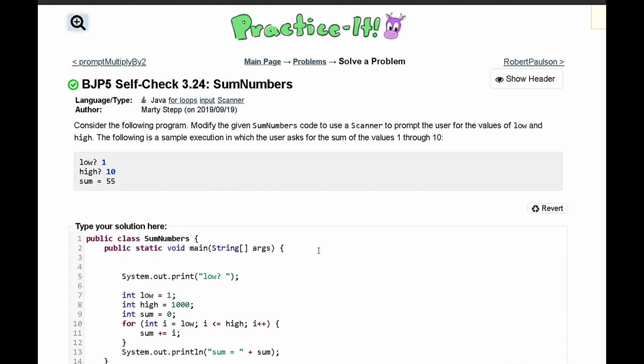So we'll have a scanner we'll call scan and set it equal to a new Scanner with parameter System.in to take input. In here we'll store our answer - we'll do int low and set that equal to scan.nextInt, and that will grab the next integer.